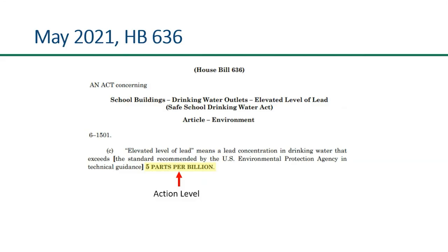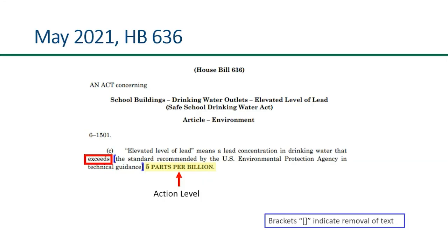As stated in the law, an elevated level of lead means the lead concentration in drinking water exceeds five parts per billion. Please note that the brackets indicate removal of text within the law. A copy of this state law can be found using the link in the description below or on MDE's website.